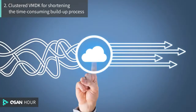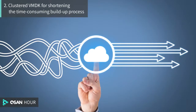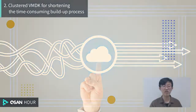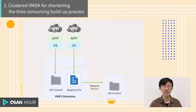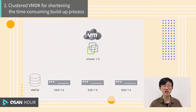QSAN supports cluster VMDK to simplify the setup process of VM application environments. With this feature, users may migrate and delete the raw device mappings, also known as RDM, which are provided to the management software for file system operations. These RDMs created in the environment handle failover clusters and further allow the virtual machines to access VMware's unified and simplified virtual disk management. In brief, cluster VMDK simplifies the deployment of large amounts of virtual machines whilst enhancing performance in terms of output.